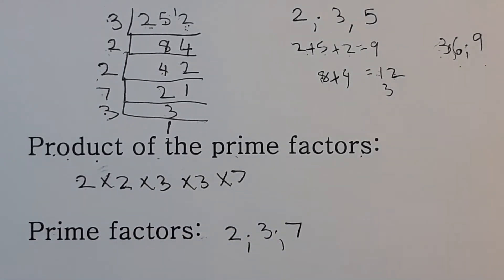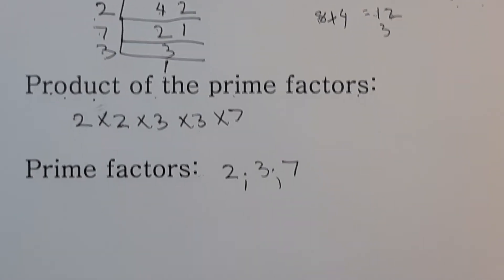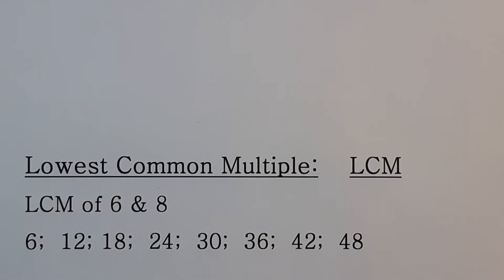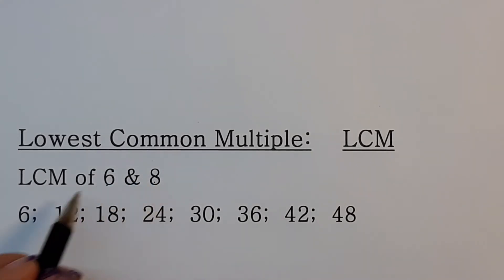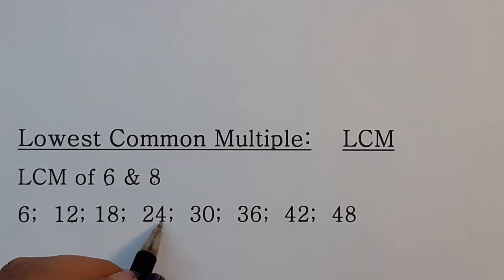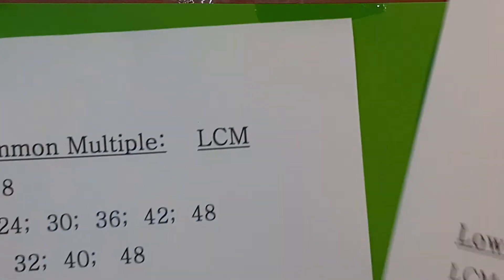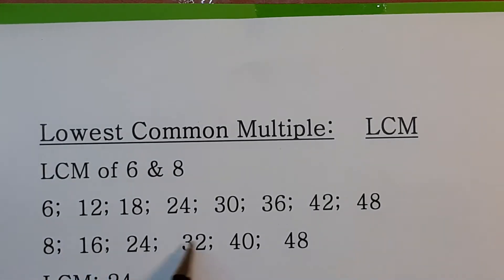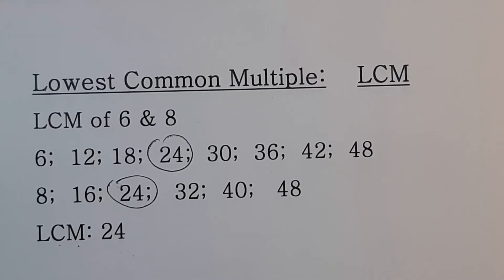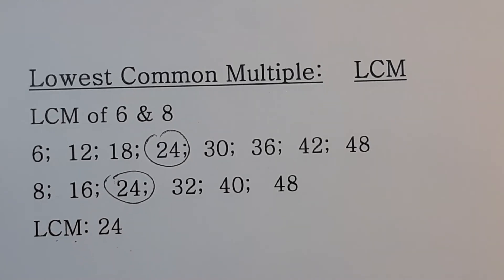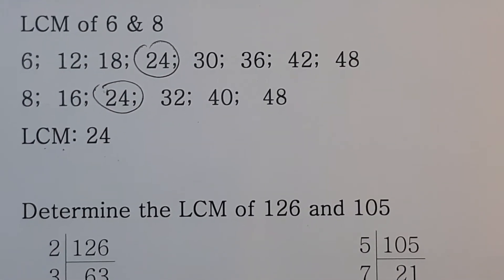To determine the lowest common multiple — in grade six, you found the LCM by counting in those numbers. For example, counting in sixes: six, twelve, eighteen, twenty-four; and counting in eights: eight, sixteen, twenty-four. The first number that appears in both lists is the smallest, so twenty-four is the lowest common multiple. But in grade seven, you have to find the LCM of three-digit numbers, so it's easier to factorize.